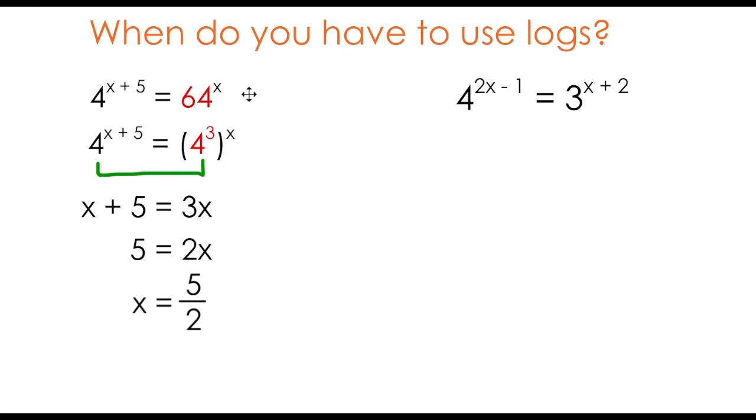Remember, in the first problem, the first observation I made was that I could take 64 and write it as a base of 4 to the power of 3. This was convenient because the other side of the equation involved a base of 4 also. In the problem on the right, you're going to see that I run into difficulty very quickly.